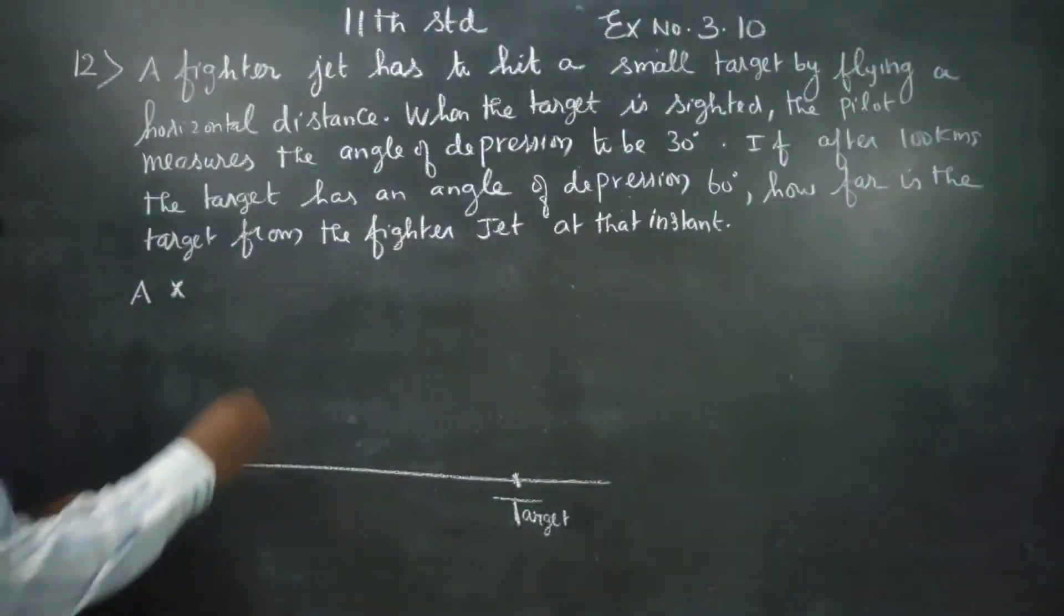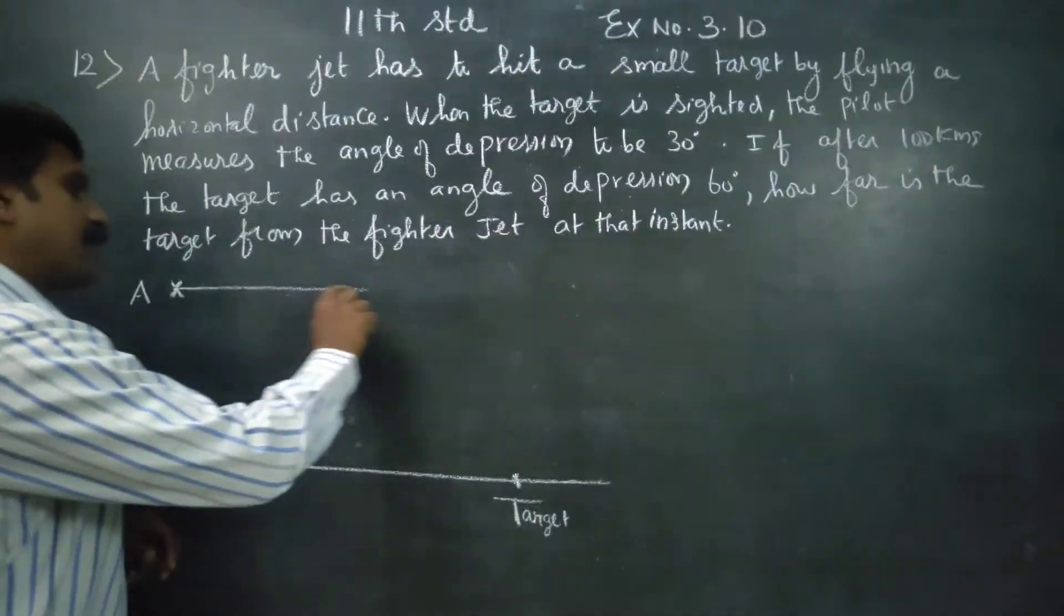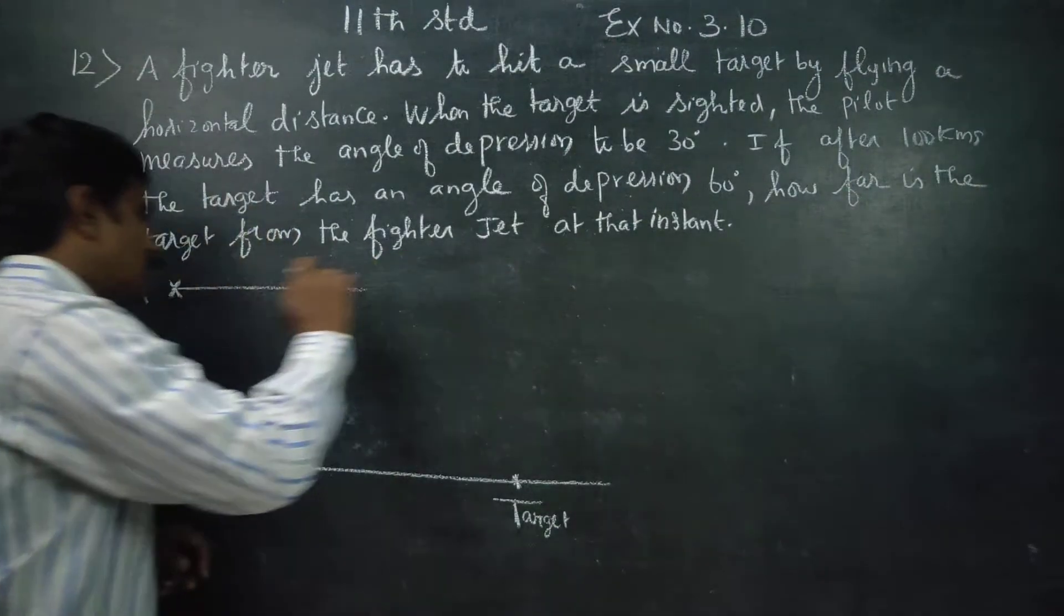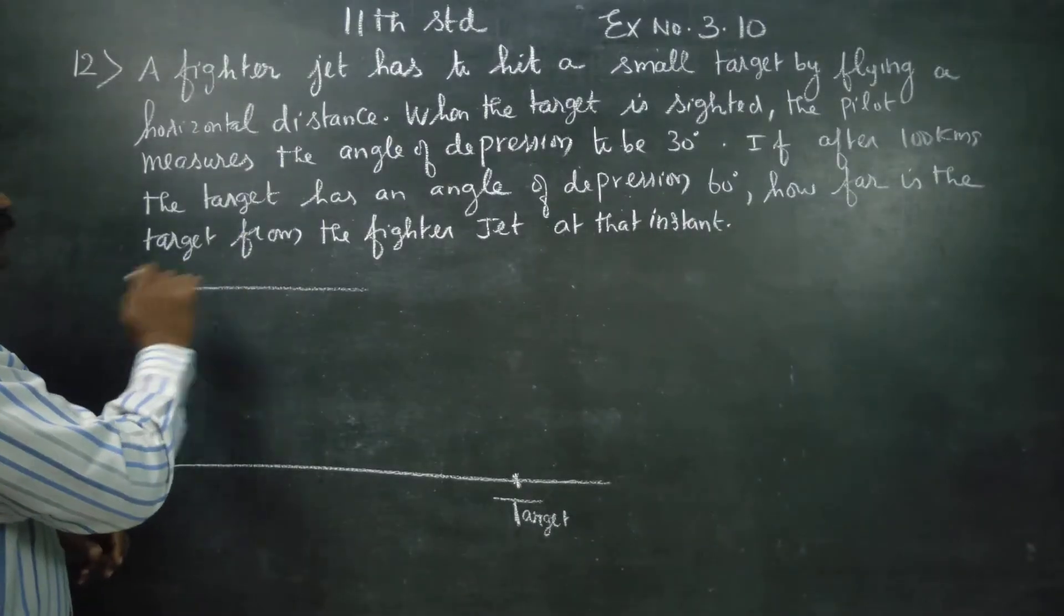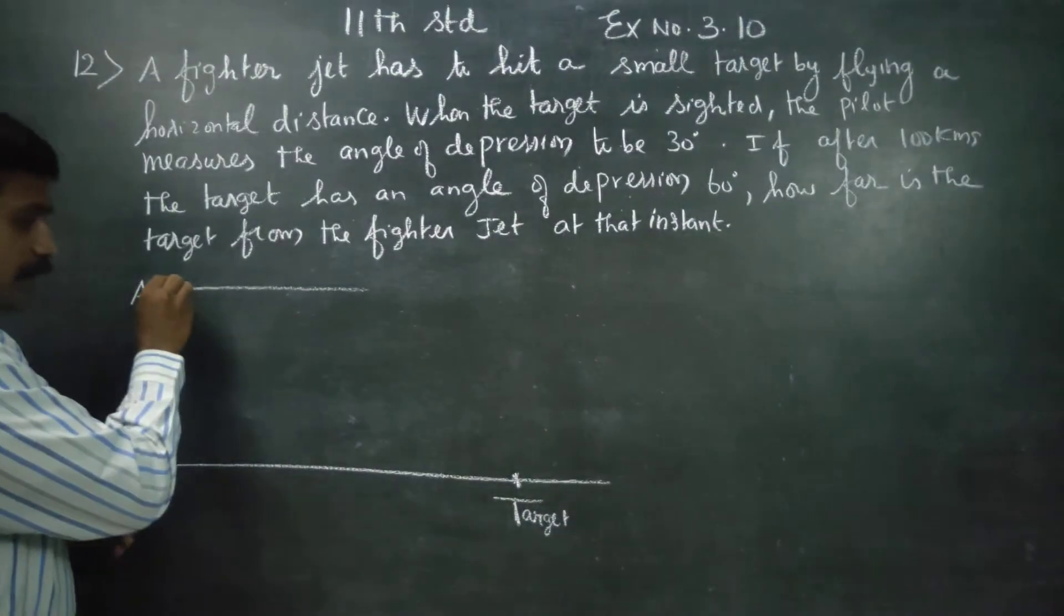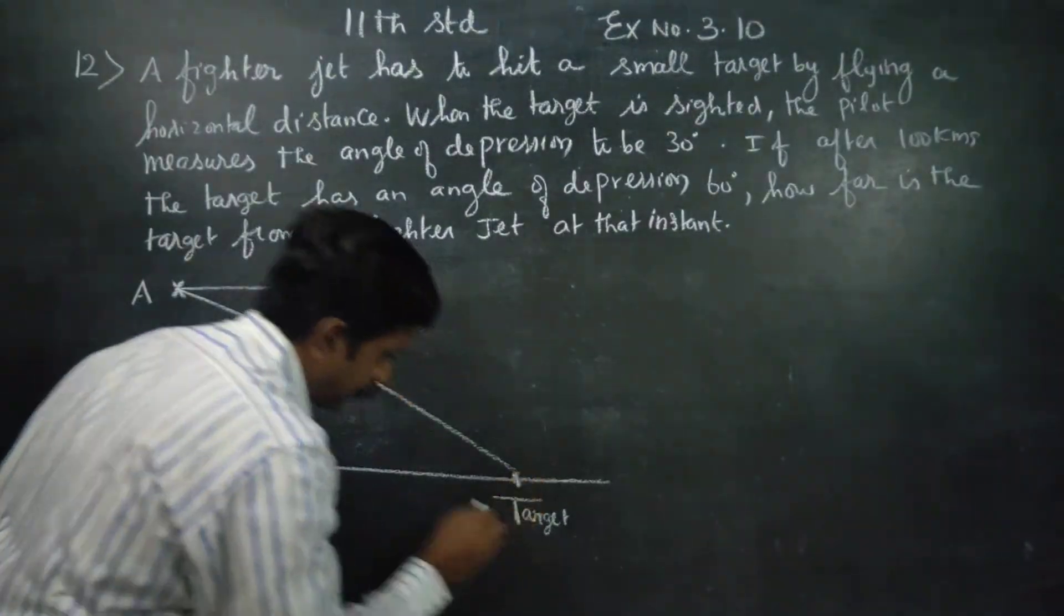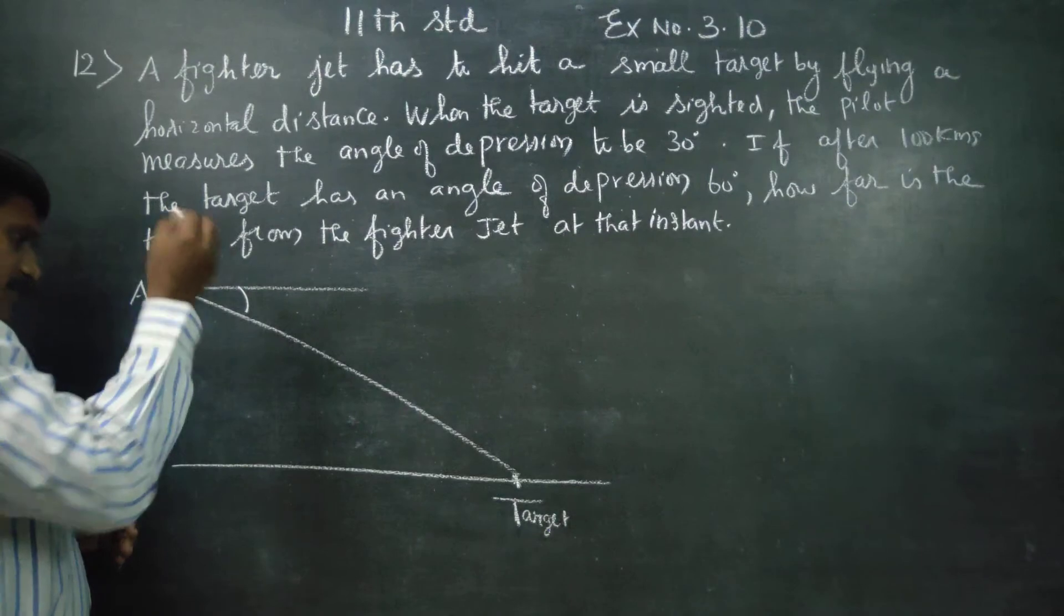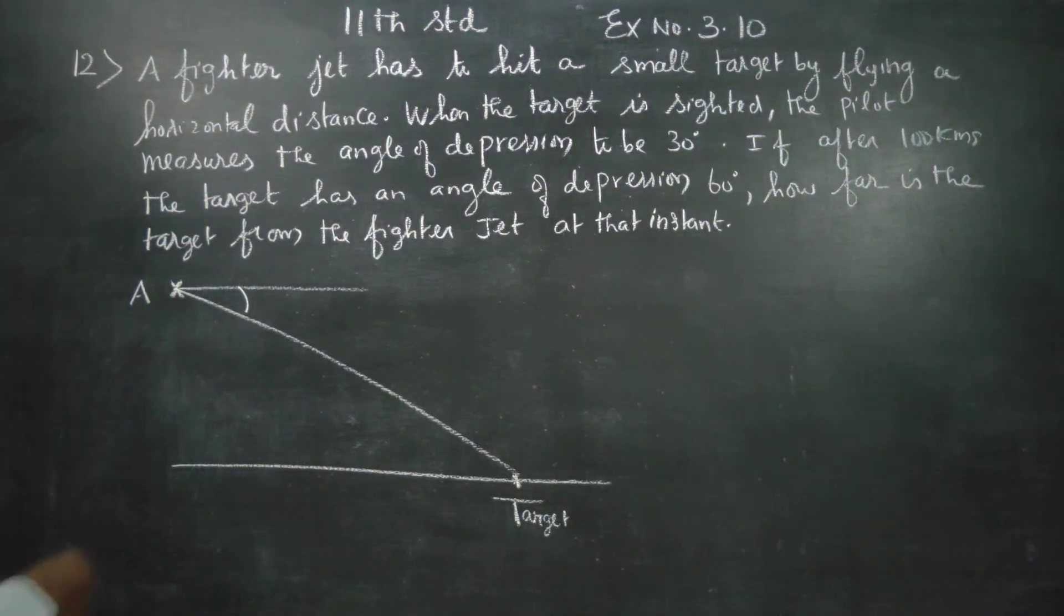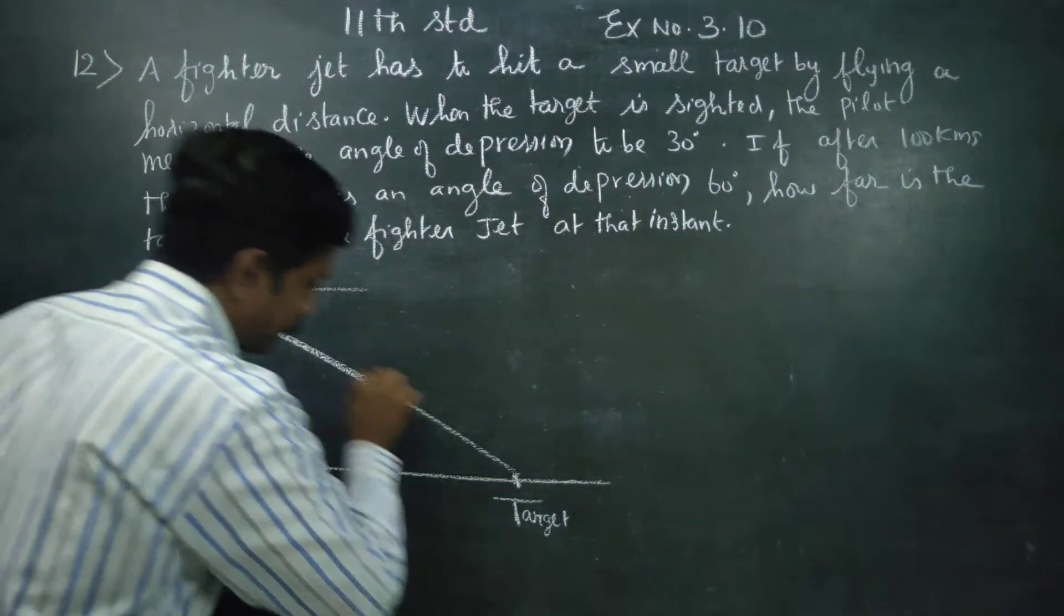What is the angle of depression? This is the straight line of vision. The pilot's line of vision. The angle of depression is 30 degrees.